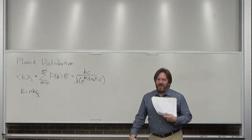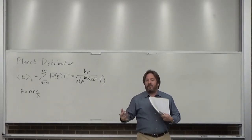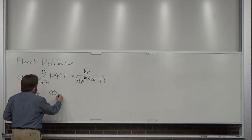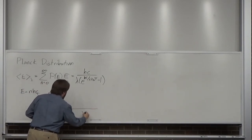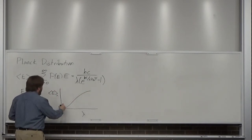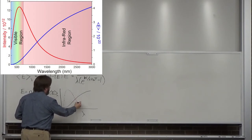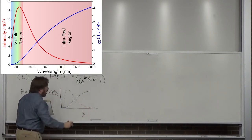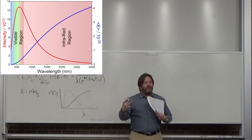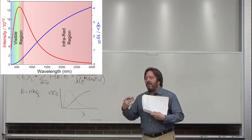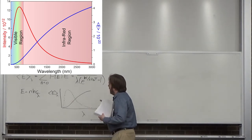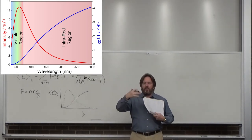The problem is that when we plot the average energy for a particular wavelength versus wavelength, what we got doesn't match the actual light bulb spectrum. The light bulb spectrum looks like the dotted line and our result is the solid line — those are not the same. That's where the greater difficulty in this part of the class is found.